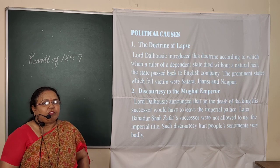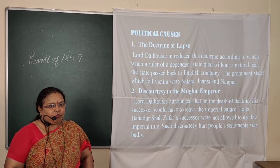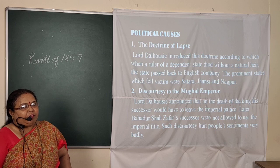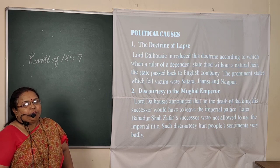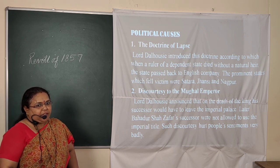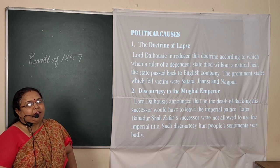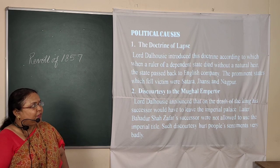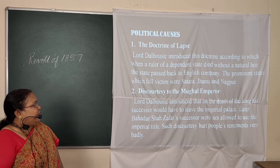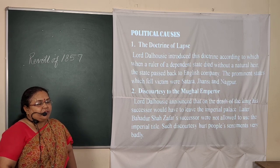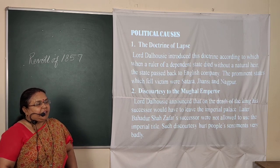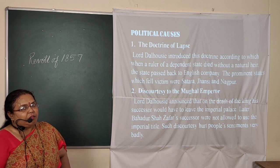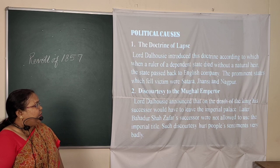The Doctrine of Lapse was given by Lord Dalhousie. According to him, if any emperor dies without leaving a natural heir, then the whole empire will go into the hands of the British. According to this doctrine, Sattara, Jhansi, and Nagpur went into the hands of the British.